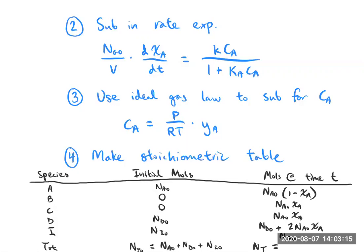Conceptually, the relationship — total moles equals initial moles plus 3·N_A0·X_A — is what tells you how volume changes as a function of conversion. From the ideal gas law at constant pressure and temperature, the total volume is directly proportional to the total number of moles. So this expression is key to understanding how the volume evolves.